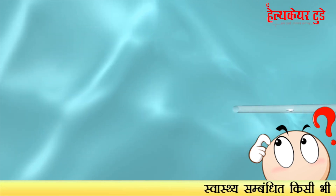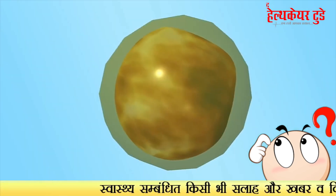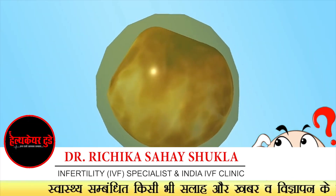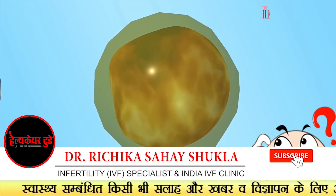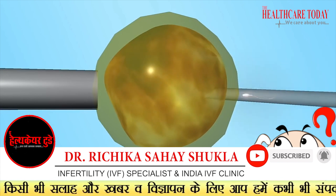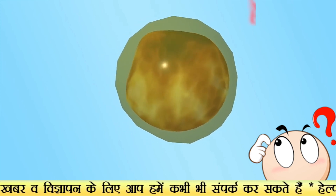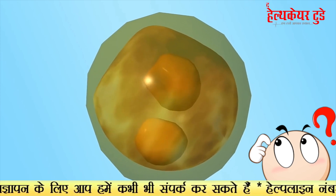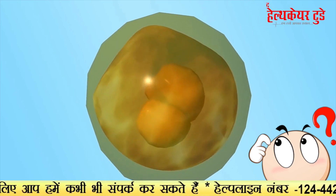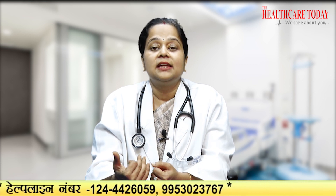Thirdly, the procedure is called Micro-TESE. Micro-TESE is a big boon for couples who come with reports showing no sperms in the FNSE sample, or where a TESA has been done and no sperms were retrieved. These couples can go ahead with Micro-TESE, in which the operating surgeon uses an operating microscope to hunt for sperms in the testicular tissue, and then gives the sample to the embryologist.